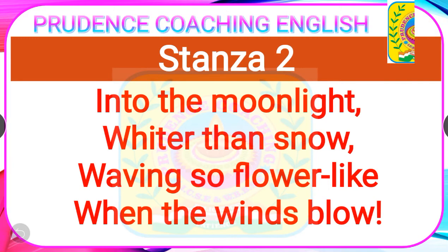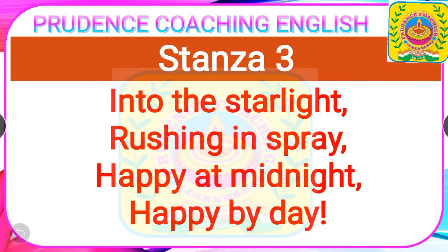Now the third stanza. The poet describes the fountain in starlight. He says that the waters of the fountain look as if spread out under the stars. No matter day or night, the fountain stays forever. The poet also expresses that he wanted to be happy like the fountain.